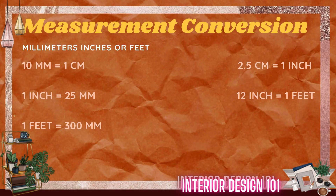This is a simple measurement conversion to understand the different units of measurement. 10 mm is equal to 1 cm. 2.5 cm is equal to 1 inch. 1 inch is equal to 25 mm. 12 inches is equal to 1 foot. 1 foot is equal to 300 mm.